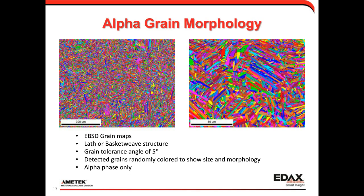Since 98% of the measurements are the hexagonal alpha phase, we group orientations as grains using a defined grain tolerance angle of five degrees — if the misorientation between one pixel and the next is below that tolerance, those pixels are clustered as grains. Grains are randomly colored to show size, shape, and morphology. While previously colors indicated orientations, here they're random but give an idea of grain appearance. We can see a nice lathy, basket-weave-type structure at both scales of the microstructure, and it appears pretty homogeneous over the larger area.